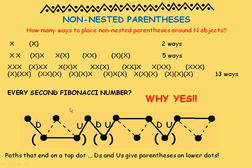The answer is yes. Consider paths that start on a top dot and end on a top dot, and focus on what happens on the bottom row of dots. We can think of each down-and-up step as parentheses placed around the dots on the bottom row. A path gives you a way to put non-nested parentheses around the lower dots, and if you put non-nested parentheses around lower dots, it corresponds to a unique path. So there's a perfect matching between non-nested parentheses and paths. The reason we get every second Fibonacci number is that we're focusing on paths that start and end on the top row — that's F1, F3, F5, F7, F9, F11, F13.